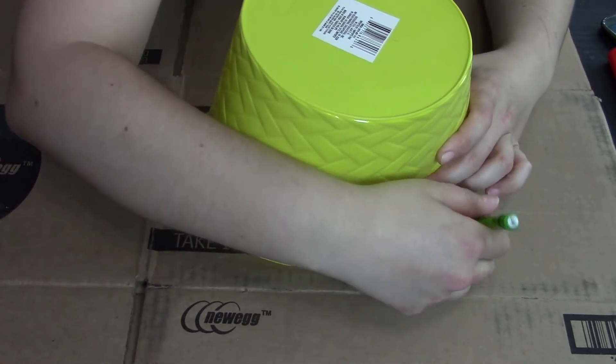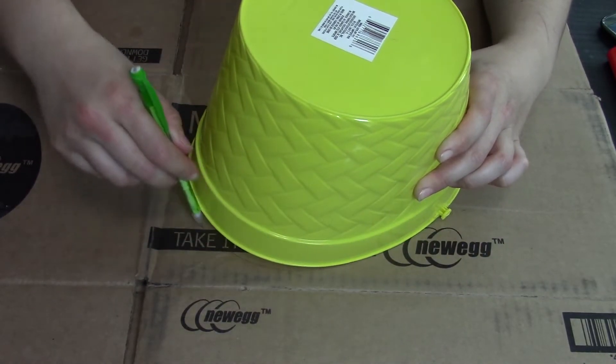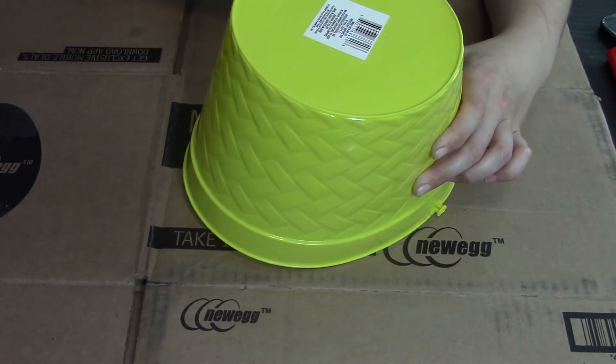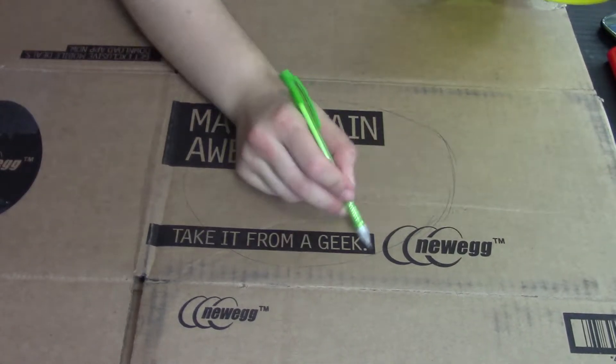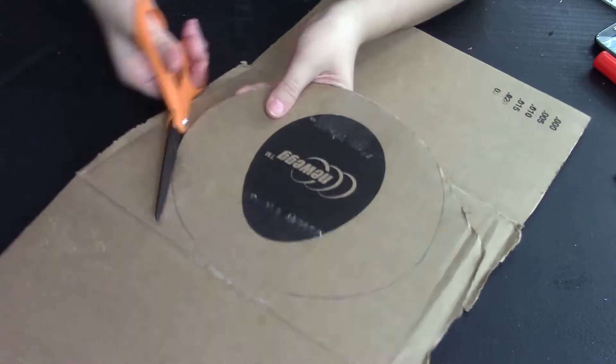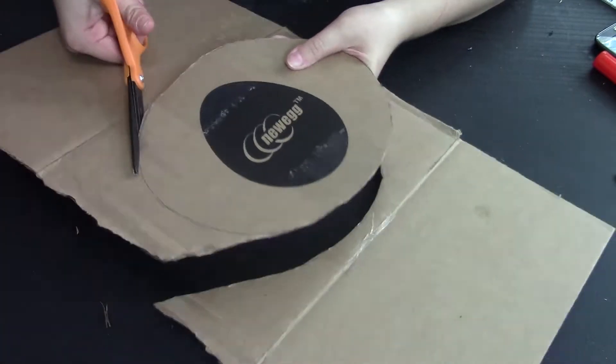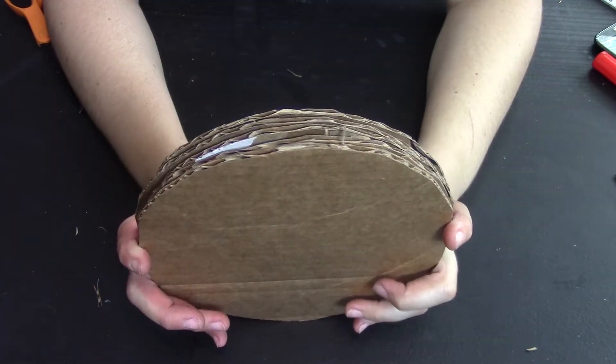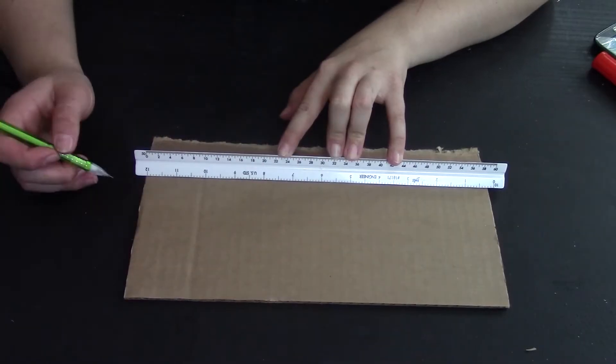The first thing I do is make a Mario coin. I have this Easter basket that you can hold and make into an oval shape, so I trace that and cut it out of cardboard. You need five of these to make a coin, so I cut out five of those.